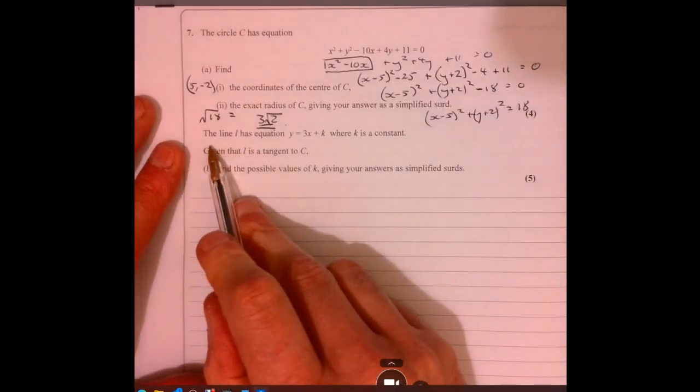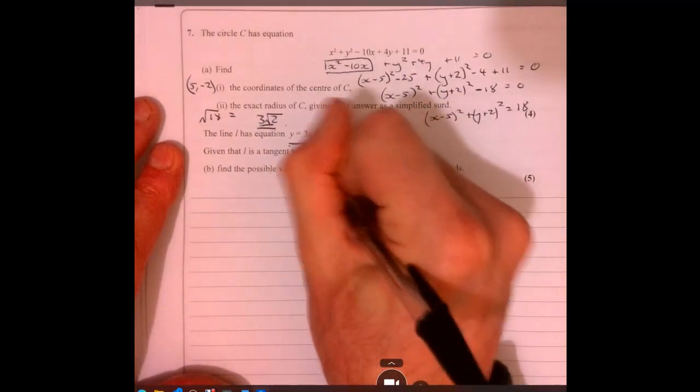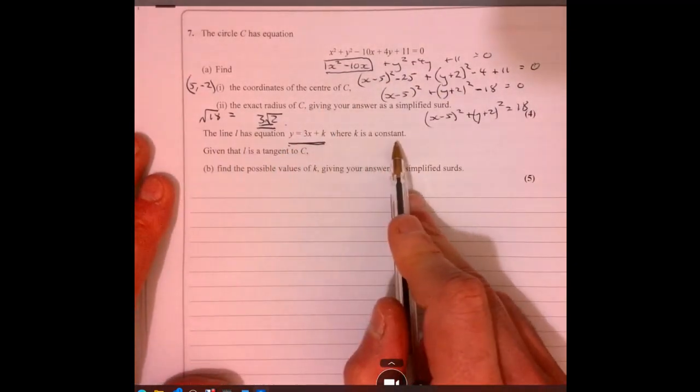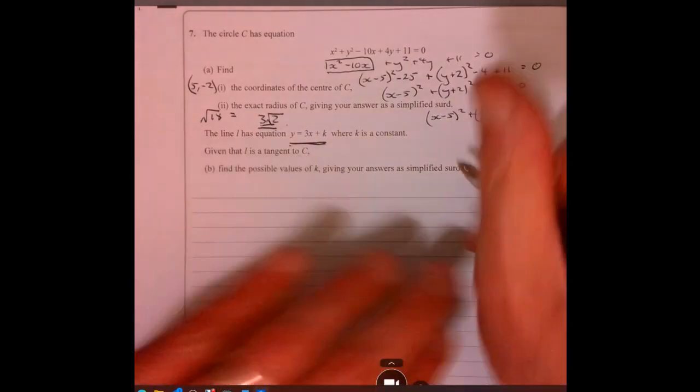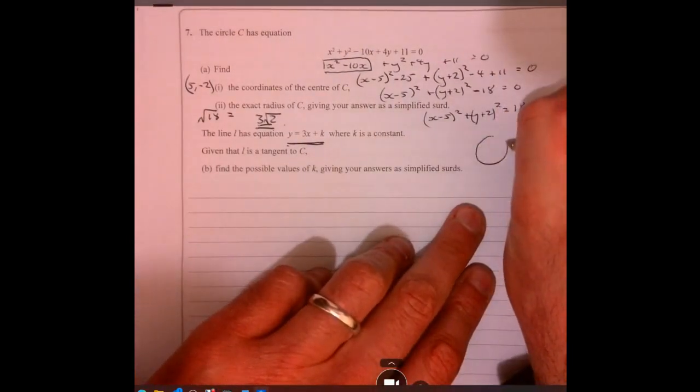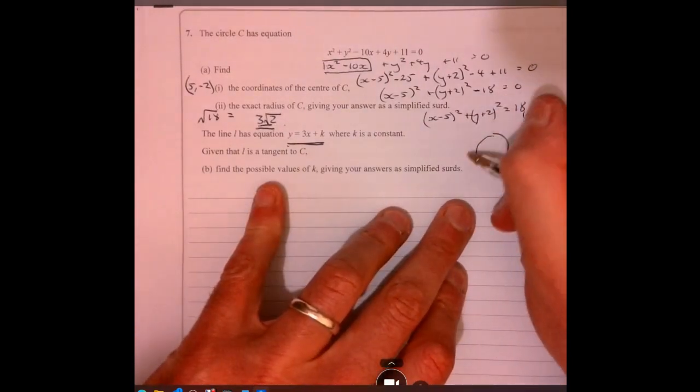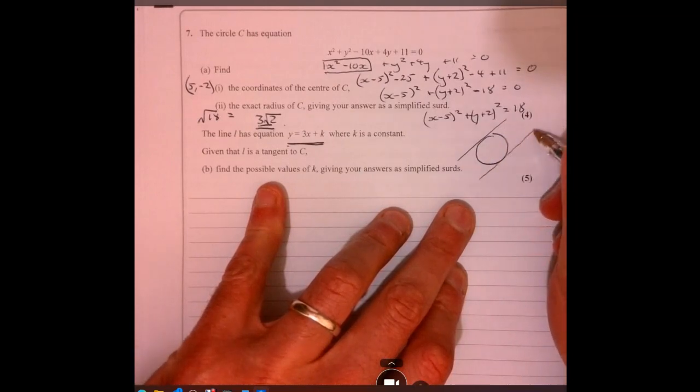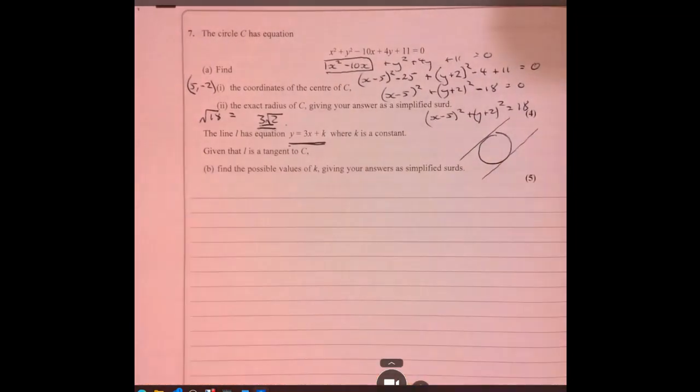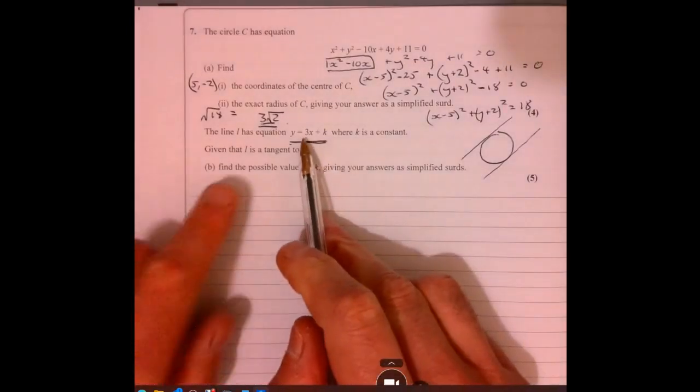Now let's get on to the next part of the question. Line L has equation K, where K is a constant, given that L is a tangent to C. So in other words, we've got a circle from the first part, and then we've got this line that might cut across there, or it might cut across there. So K is going to have two possible values there. So how are we going to work that out?